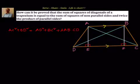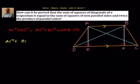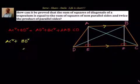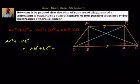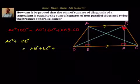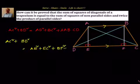Let's start from the LHS. What is AC² + BD²? That's what we want to find out, and our answer should come out to AD² + BC² + 2 × AB × CD. Now, AC² is the hypotenuse of a right-angle triangle with sides AE and EC, so we write AC² = AE² + EC². Similarly, BD² is the hypotenuse of a right-angle triangle, so BD² = BF² + DF².